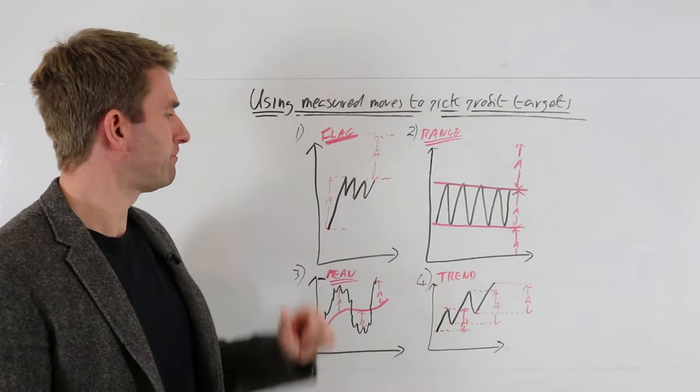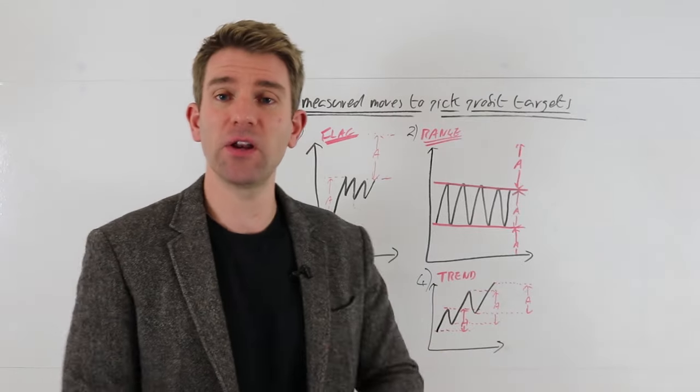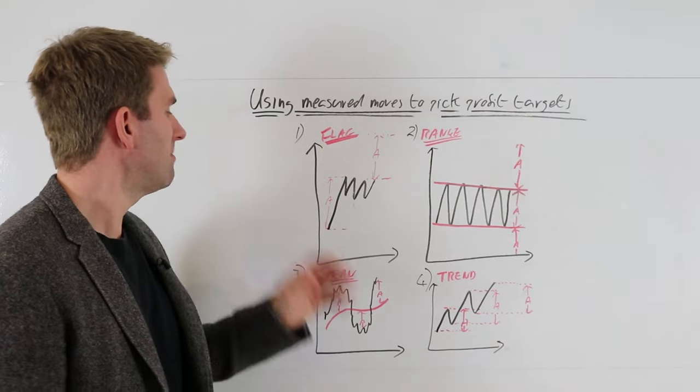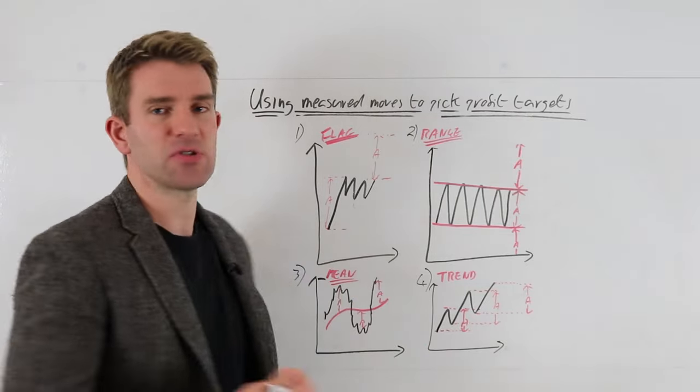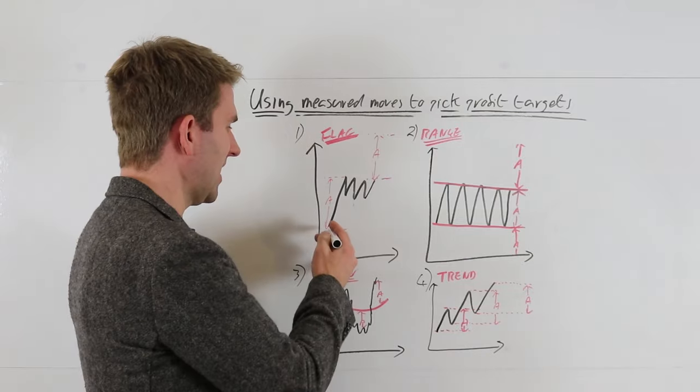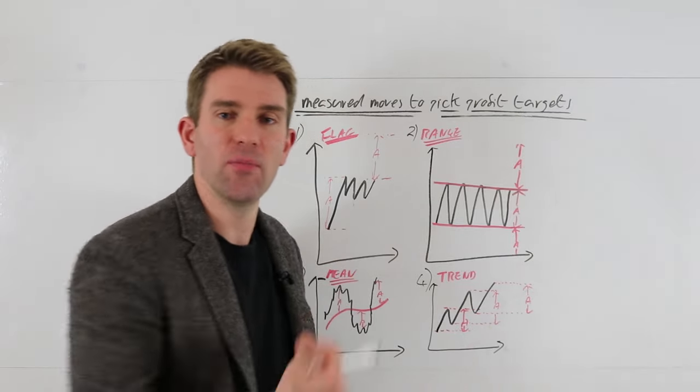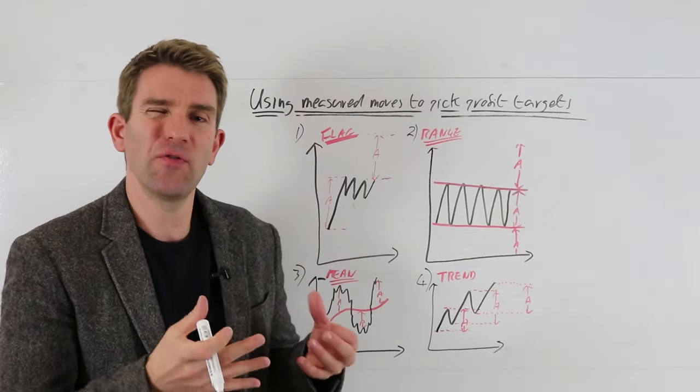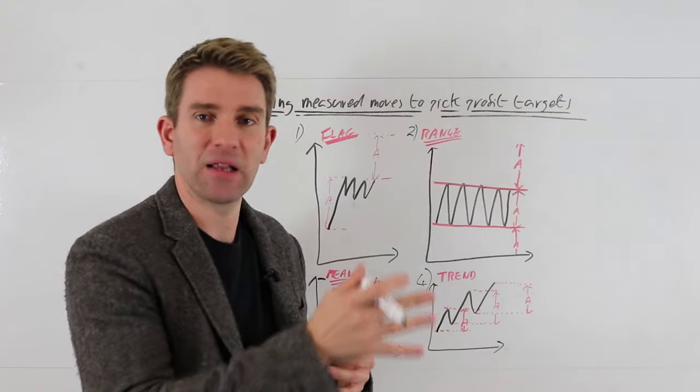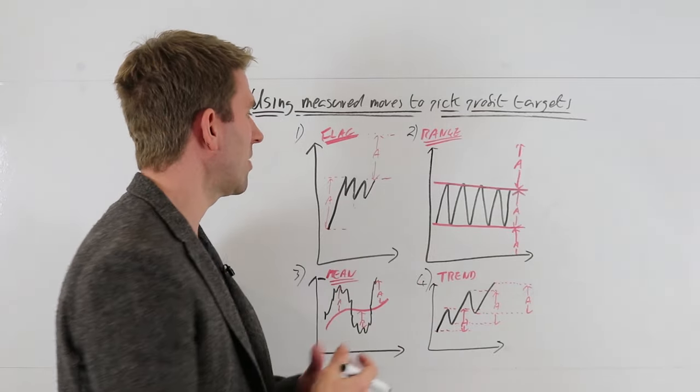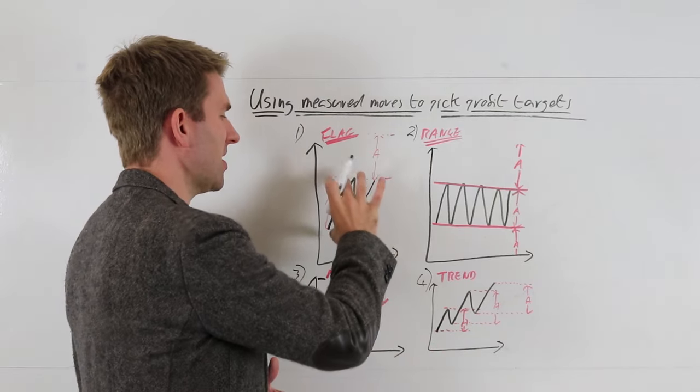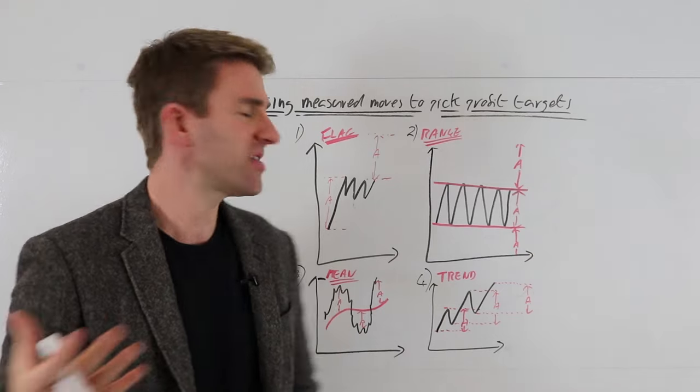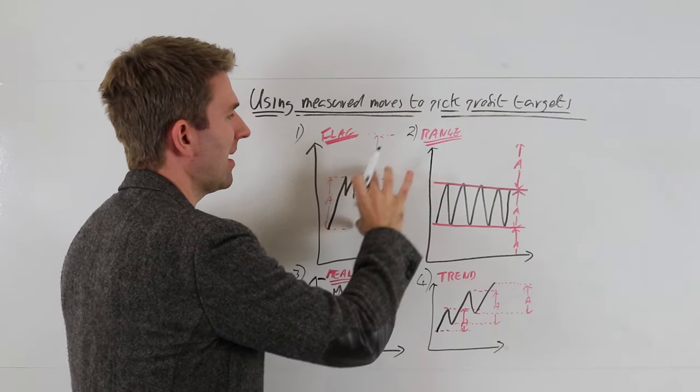So first one is a flag. So standard bull flag, bear flag, you've got the pole, you've got the flag. And then the idea of the measured move is that you can measure the distance of the pole. So that obviously didn't start, we don't get in the real world a start here, but it's where you can sense the start of the move. Obviously, that comes from either a range or comes from something, but there's always really an obvious start to it where you get the extended candle, you get the volume, that's the pole, then you get the flag. Now you could extrapolate and say, the distance of the pole, which is A, by the way, I've used just A as just a variable letter here.